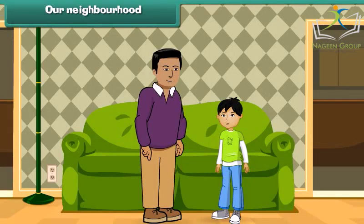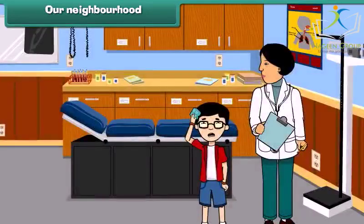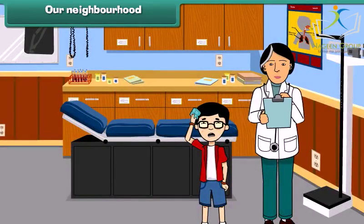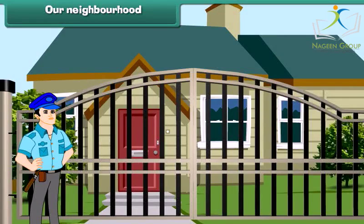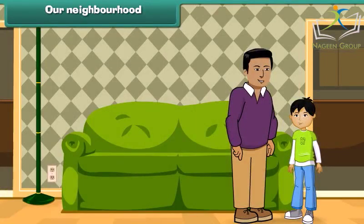Sam, we are human beings and we live in a society, and hence we need each other's help many a times. As you know, we need doctors when we fall ill, we need teachers to teach us, we need a watchman to keep our home safe. We get all this from our neighborhood. Son, now let's go outside and I will introduce you to some of the neighborhood places.